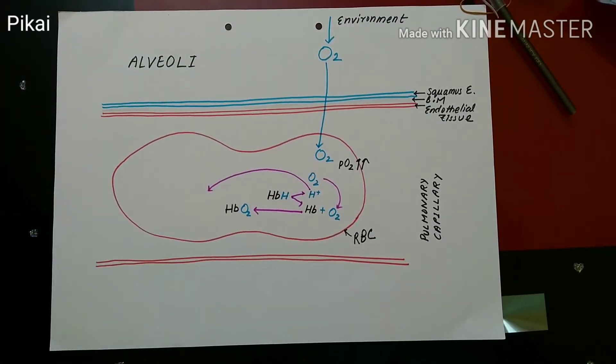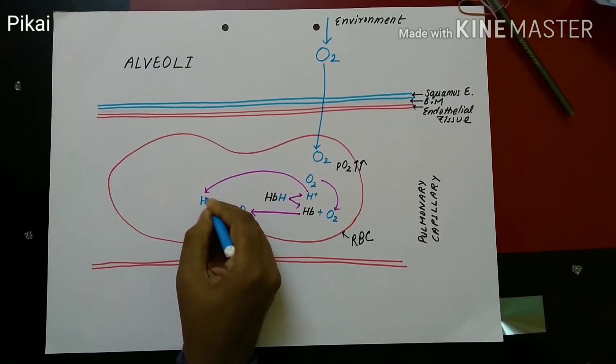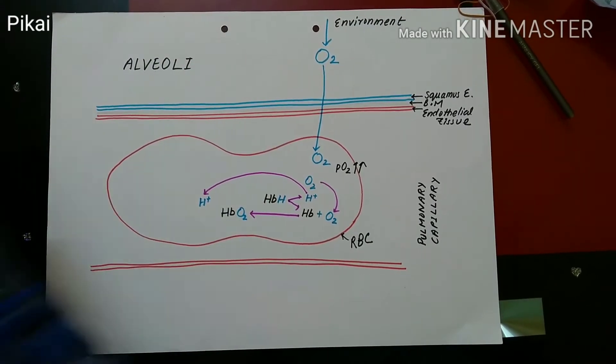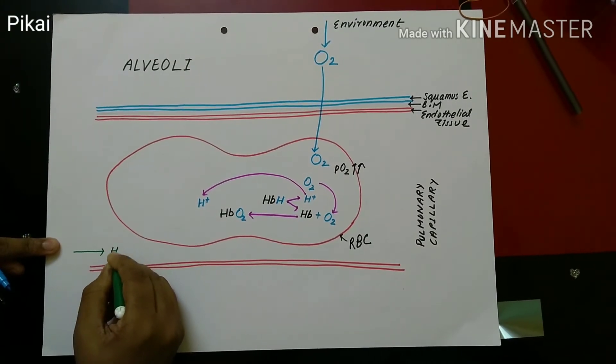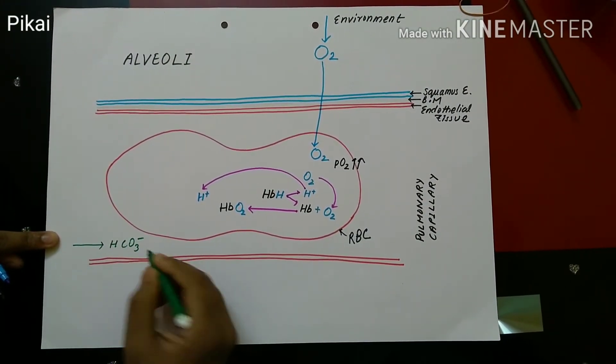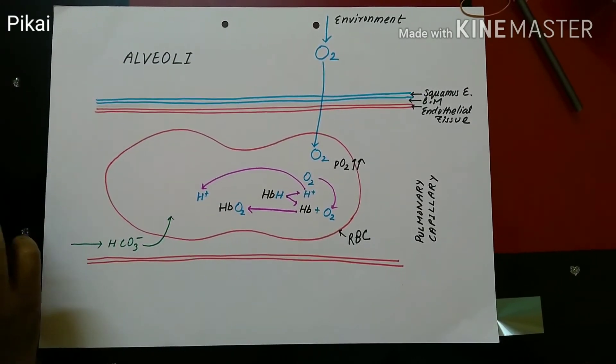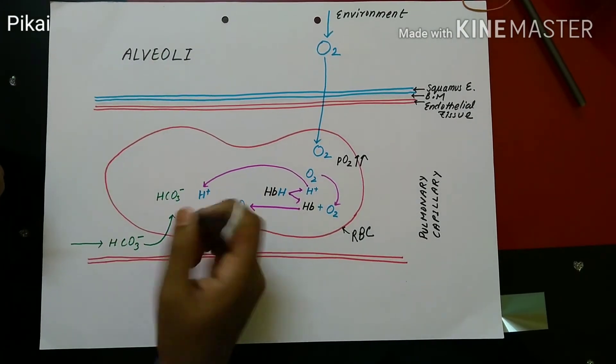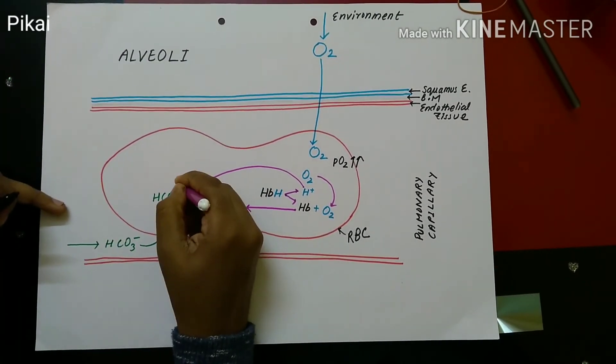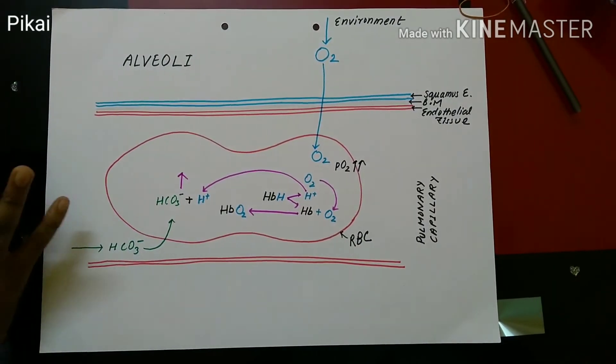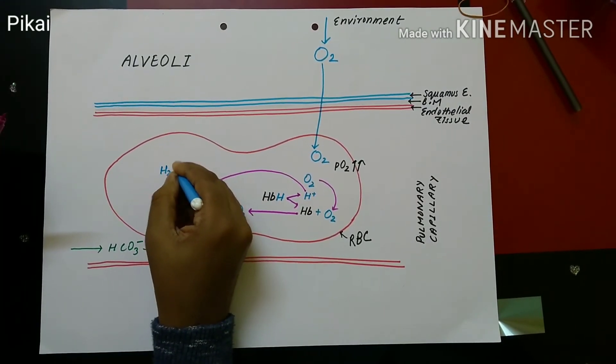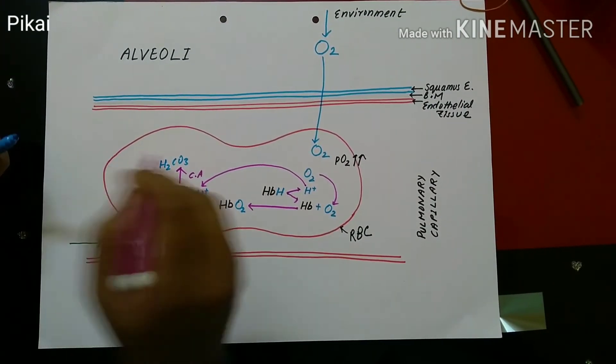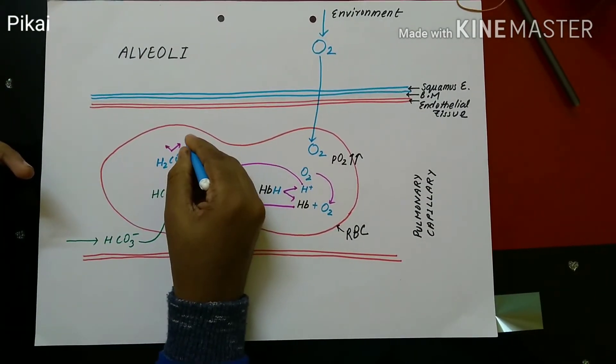And the H+ which is released due to the dissociation of HHb, this H+ moves out from that location and combines with HCO3-. Remember that HCO3- travels through blood plasma to tissue. And when it reaches pulmonary capillary, it again enters into the RBC at pulmonary capillary due to difference in concentration. HCO3-, the concentration of HCO3- is very much high inside pulmonary capillary, so it enters the RBC and combines with H+ which is released by HHb dissociation, and combines HCO3- to form H2CO3, that is carbonic acid, in presence of carbonic anhydrase enzyme.